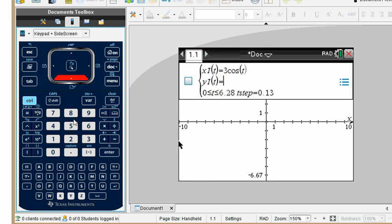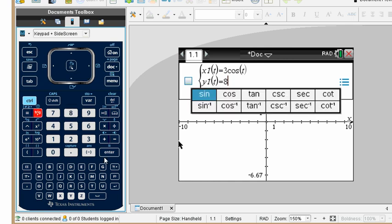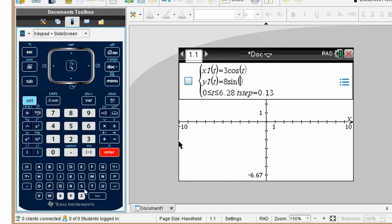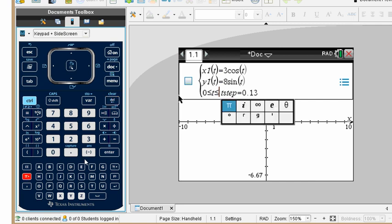And 8 sine t, and then what we have is the time limitation here was going to be through 0 to pi over 2. So we can just put in, we have 0 on the left, and then we can put in pi and divide that by 2.